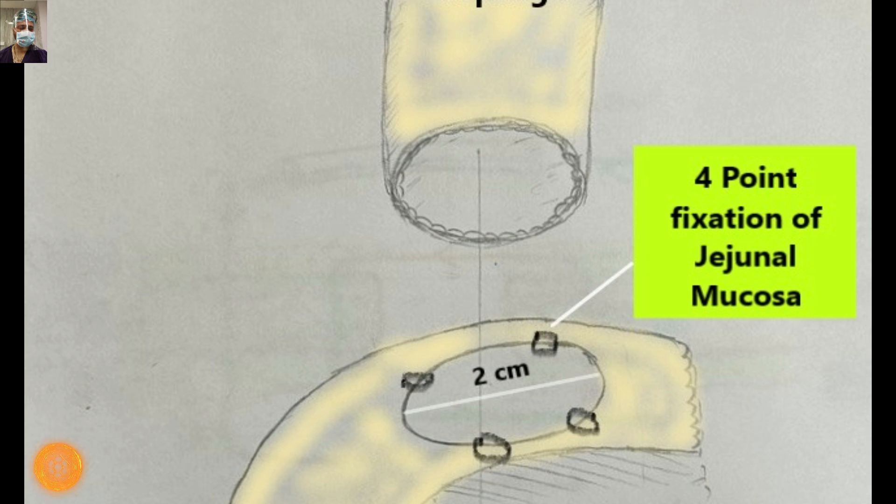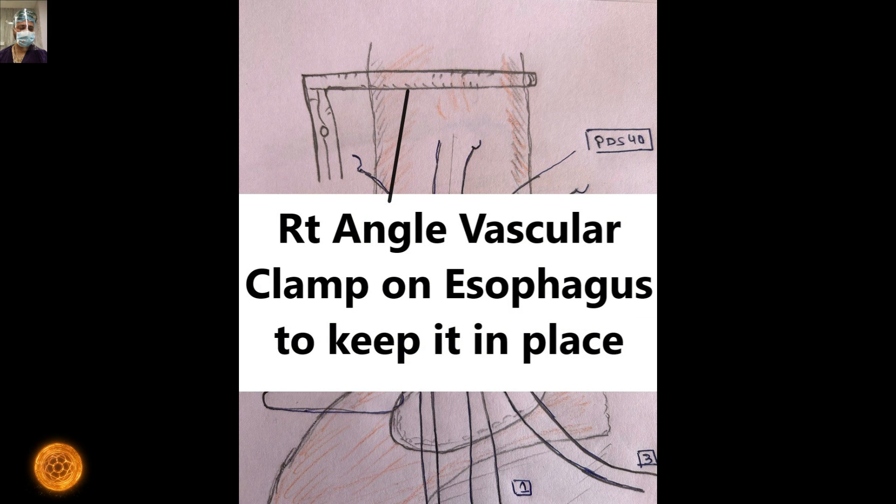As a routine we apply tucking sutures, that's four point fixation on jejunal mucosa, cat-gut, just to keep the mucosa closer to the enterotomy. Otherwise it gets retracted. The whole aim of this anastomosis or any anastomosis in GI surgery is mucosa to mucosa apposition. We always have to ensure that mucosa stays in our view. We will demonstrate the whole step in detail in live surgery. This will be the first step. We always apply some soft clamp or right angle vascular clamp on the esophagus approximately 4 or 5 centimeters above the cut margin. That will avoid retraction of the esophagus and keep it steady.